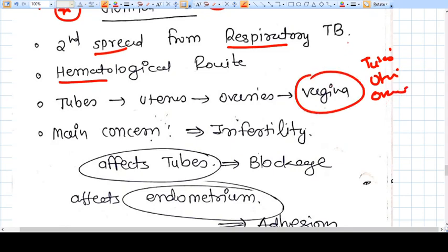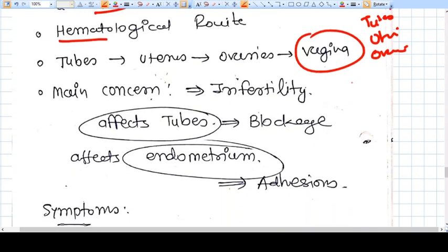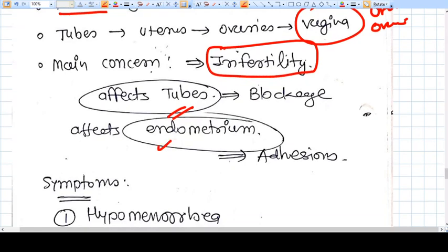The vagina is the least affected organ in this series. What is the main concern for genital TB? Infertility is the basic problem for genital TB as it affects the tubes, and tubes are of vital importance in reproduction. It affects the endometrium also, which will also decrease the fertility potential of the endometrium.